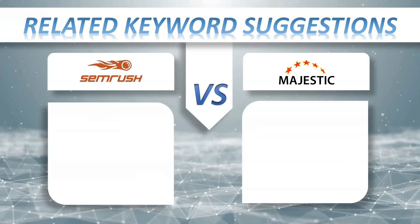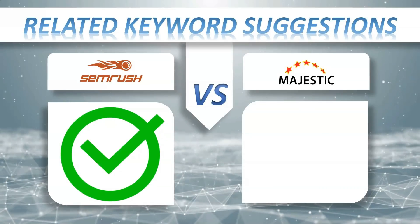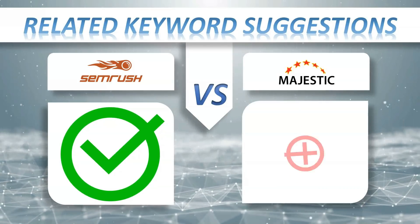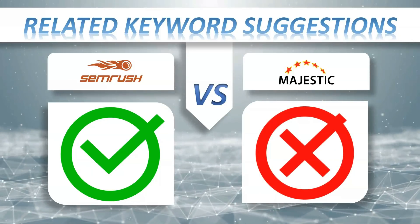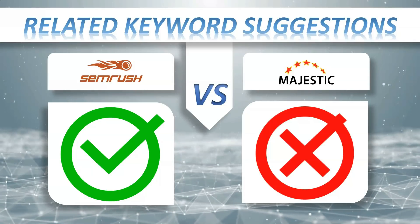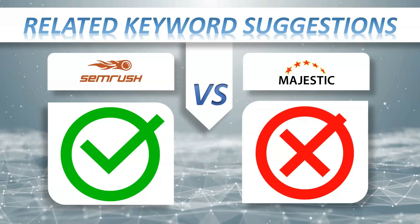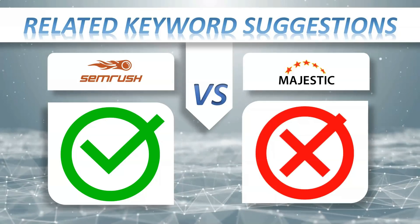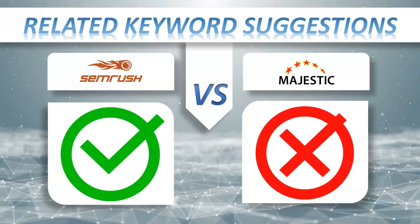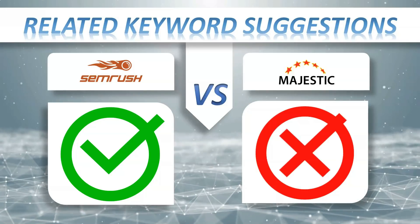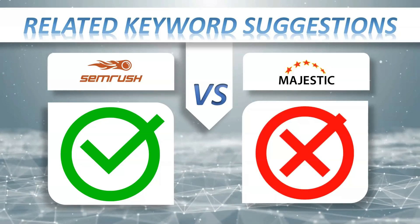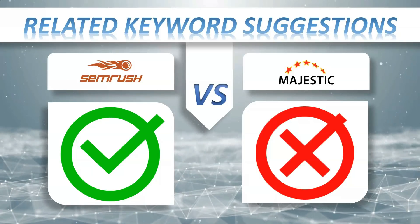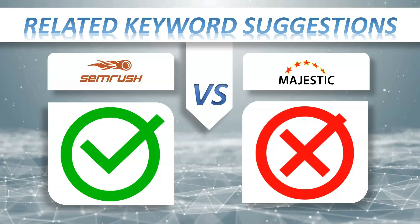Related keyword suggestions: SEMrush plus, Majestic minus. The easiest way to acquire clients is to find out what your potential customers or readers are searching for on Google and create content around those topics. Imagine how your business would benefit if you could analyze search trends, find related search terms, and customize content to serve the actual needs of your customers.